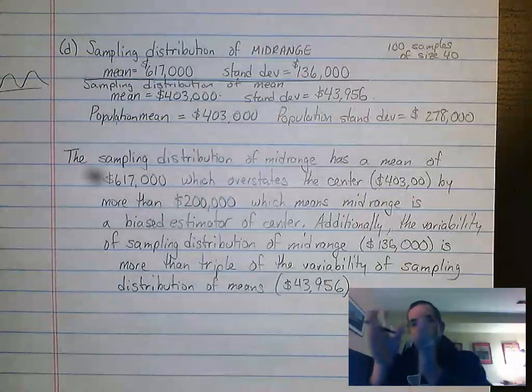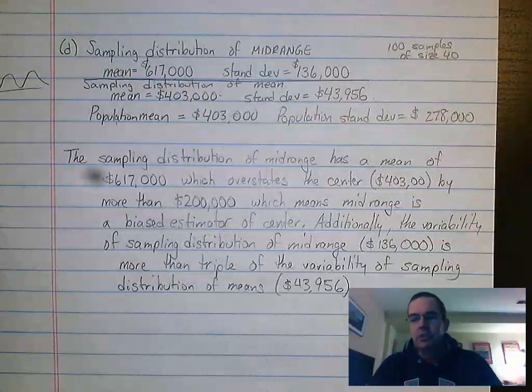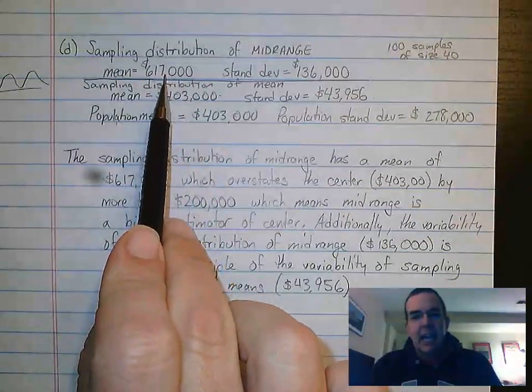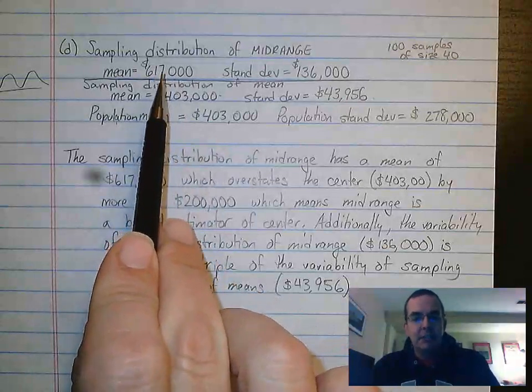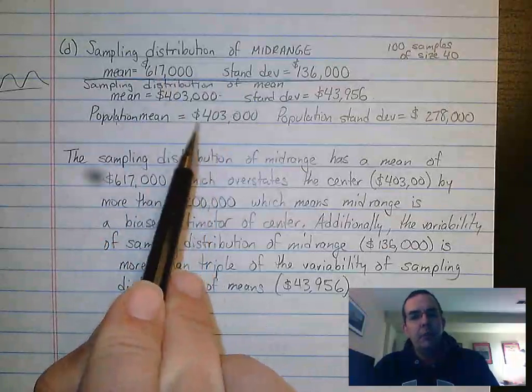And the two pieces that we need to talk about here are first about bias and second about variability. So first about our center, then about our spread. The bias issue here, the sampling distribution of mid-ranges has an average, has a mean of $617,000.